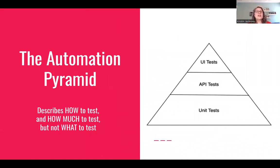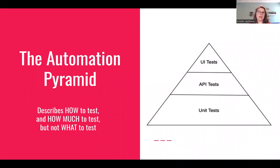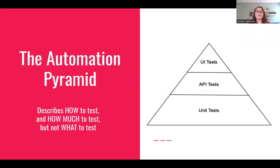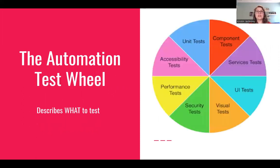Let's get started with the automation pyramid. Probably everybody is familiar with it — you've got your unit tests, your API tests, and your UI tests. The pyramid shows roughly how much of each test you should have. You want more unit tests because those are the fastest and most reliable, fewer API tests, and the fewest UI tests because those are the longest to run and also the most flaky. The automation pyramid describes how to test and how much to test, but it doesn't really describe what to test. That is why I created something called the automation test wheel.